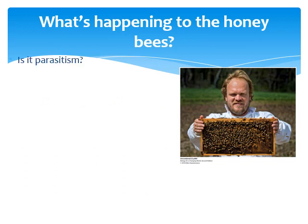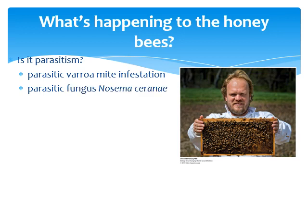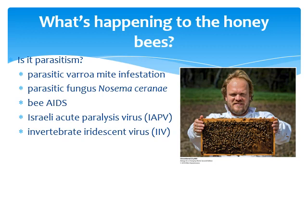As I've alluded to, we're not quite sure what's causing CCD. It could be parasitism — the varroa mite really suppresses bee immune systems. There's also a parasitic fungus called Nosema ceranae, which is pretty disruptive and destructive. There are also bee AIDS, Israeli Acute Paralysis Virus (IAPV), and Invertebrate Iridescent Virus (IIV). The varroa mite is probably the most common and well-known, but several of these may be acting together.